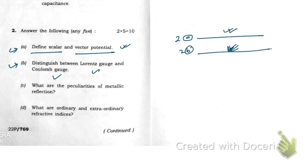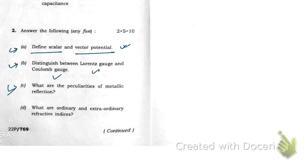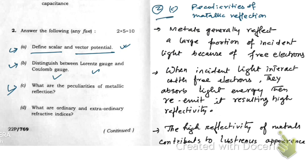Question 2c: what are the peculiarities of metallic reflection? Here is the answer — write these three points. Pause the video and note this answer or take a screenshot.